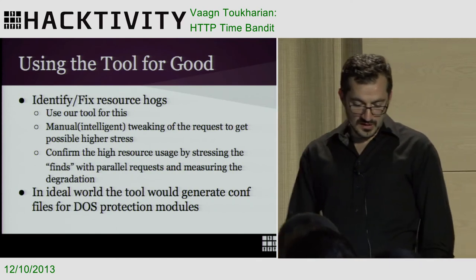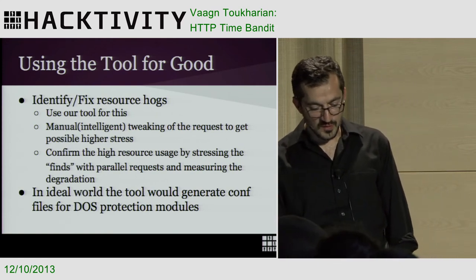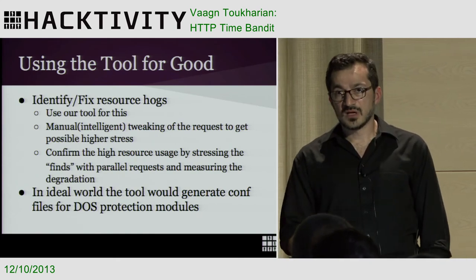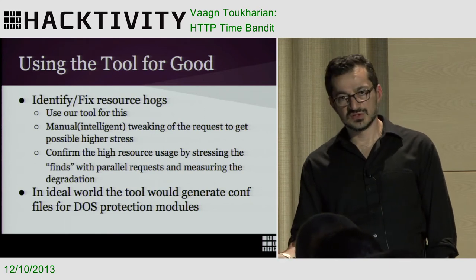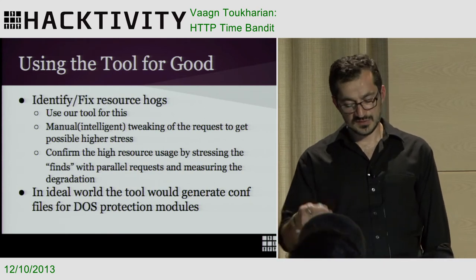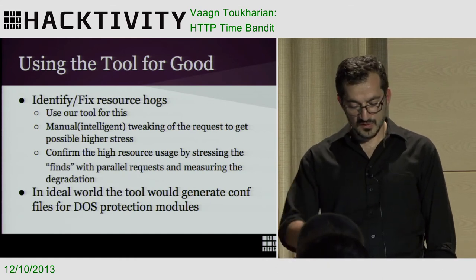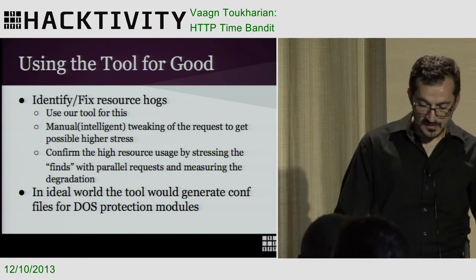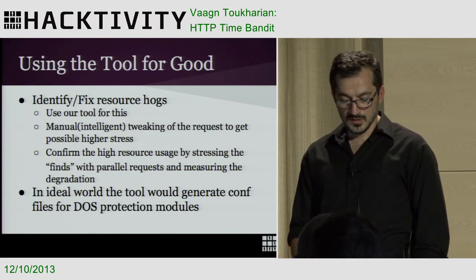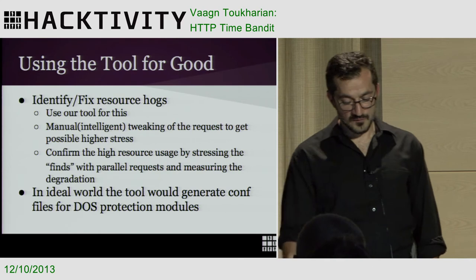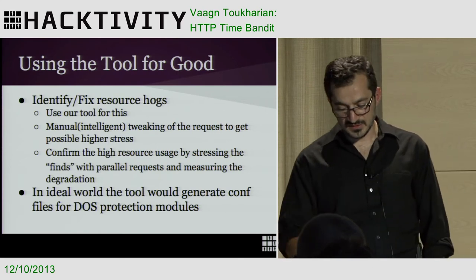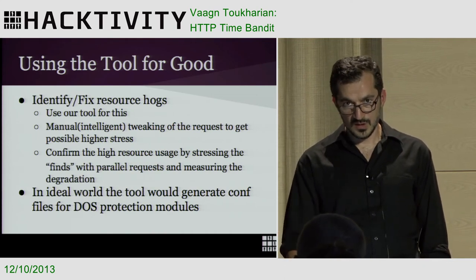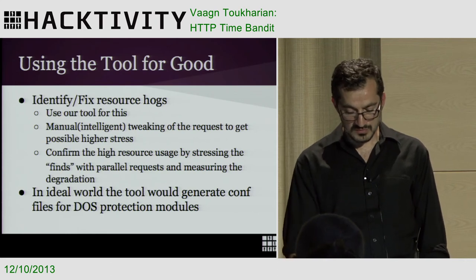What can be done with our tool is to use it as a QA tool — with some manual tweaking if business logic requires specific steps. You can find the problematic resources and fix them. With further development, if we implement parallel stressing and degradation measurement, we'll have even more confidence and can pinpoint hog resources more easily.